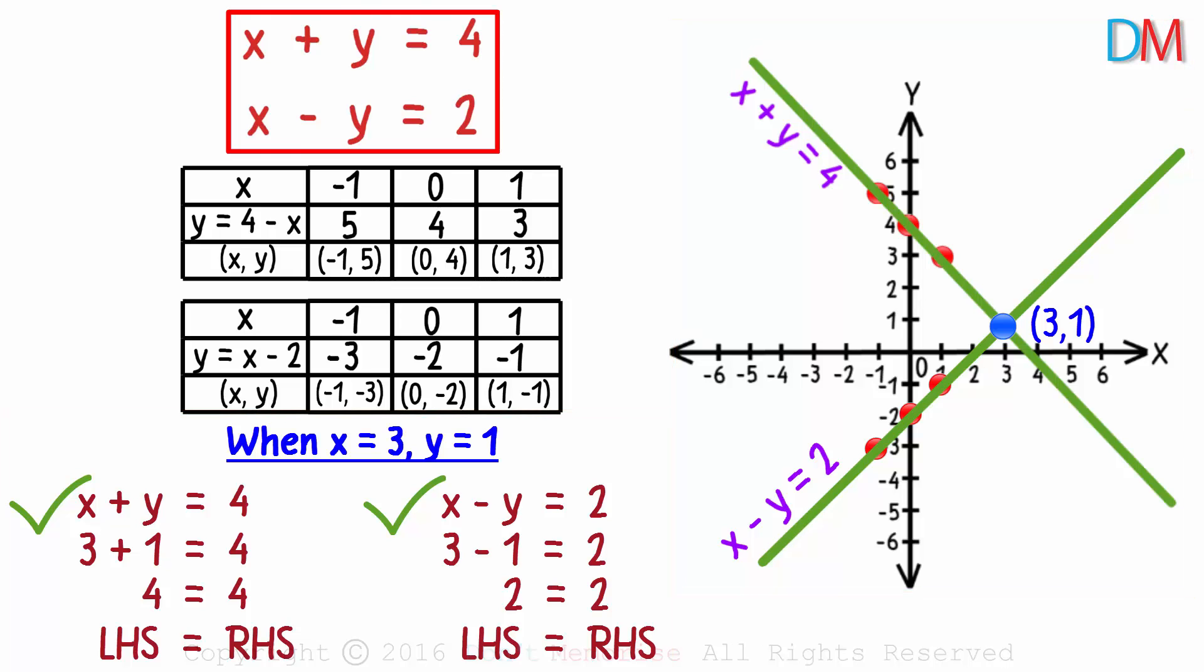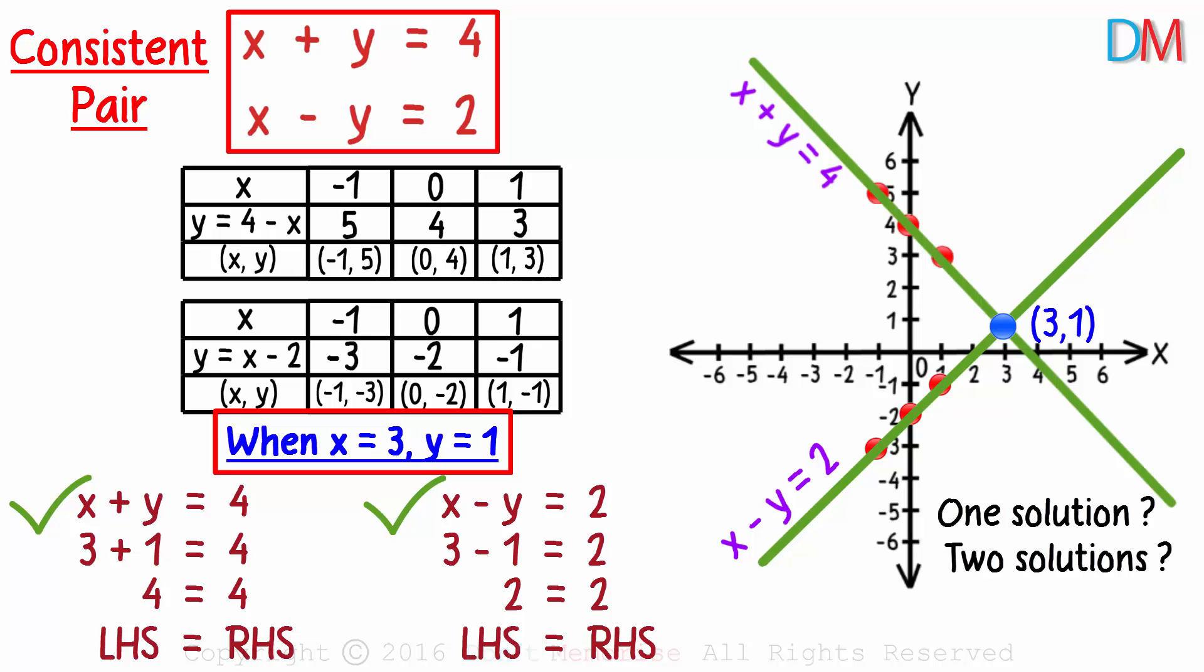This pair of linear equations has exactly one solution, which is why it's called a consistent pair of linear equations. Will any pair of linear equations always have just one solution? Can they have two solutions? Can they have no solutions? Or can they have infinite solutions? All the answers in the next video.